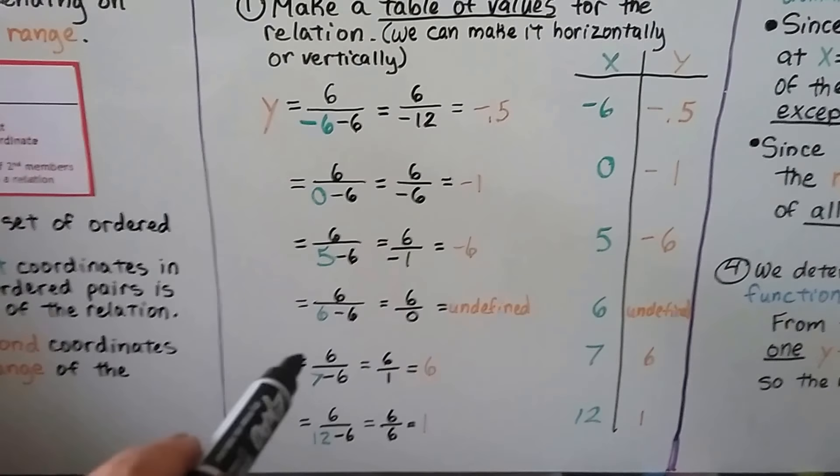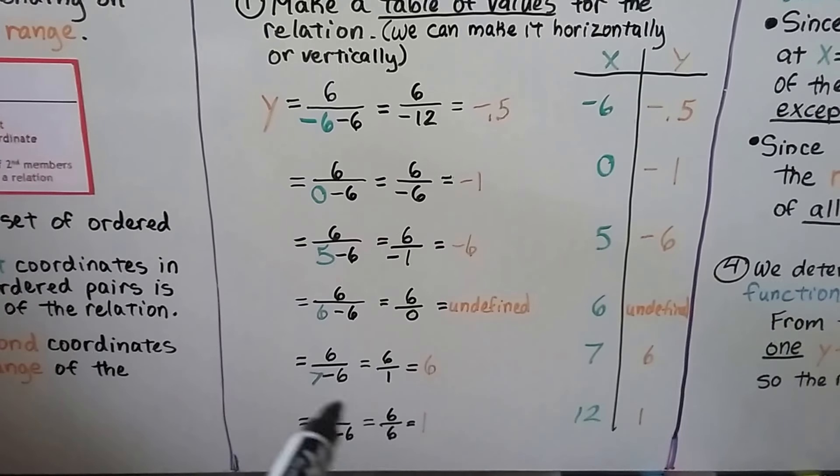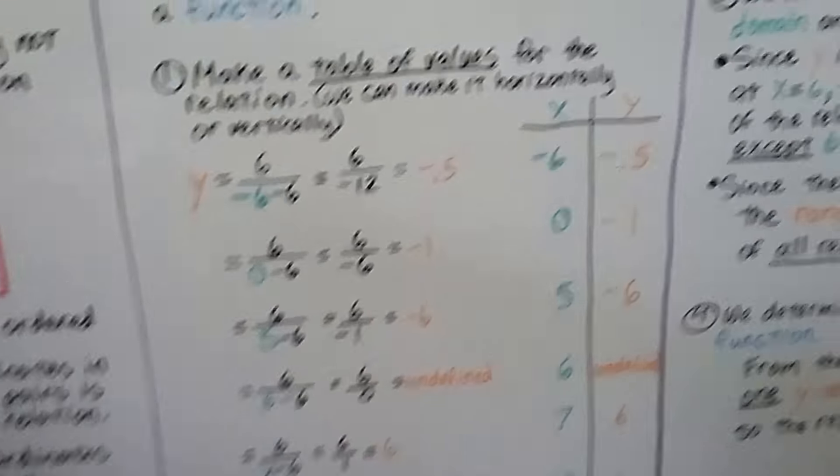You can't divide by 0. When we make it a 7, y is 6. When we make it 12, y is 1. So now we have our ordered pairs.